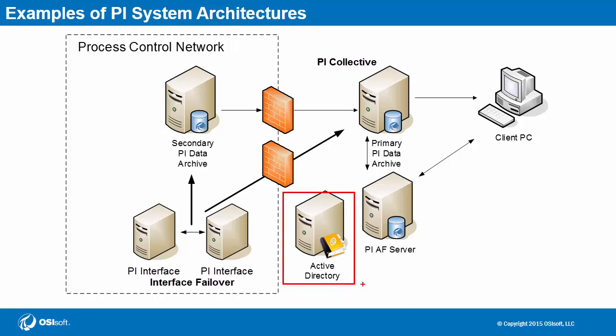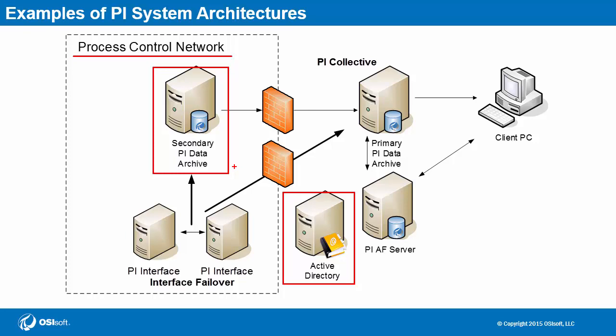In addition, this diagram shows that the domain controller located here isn't servicing the process control network, thus making this process control network a workgroup as opposed to a domain. So PI clients cannot use PI mappings to connect to this PI data archive. They'll need to stick to PI trusts, which instead rely on machine names and IP addresses.